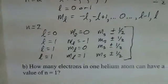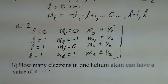Our second question: how many electrons in one helium atom can have a value of n equals 1? And now we're getting to the Pauli exclusion principle that limits the number of electrons we can have in a particular state to 1. There's 1 electron for 1 set of 4 quantum numbers. Well, we've already taken a look at this.